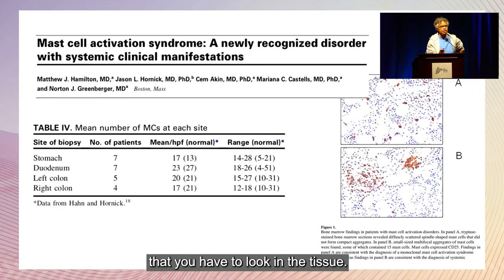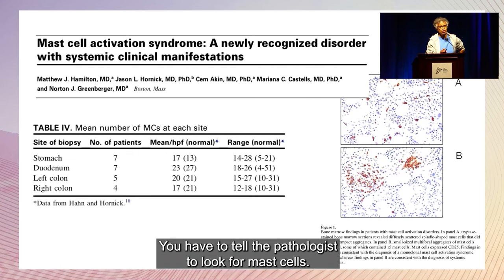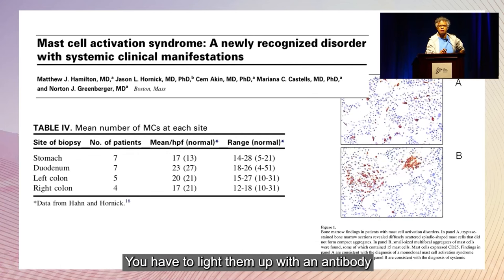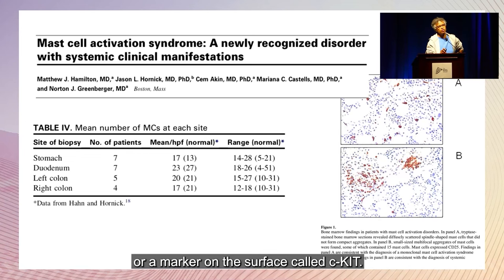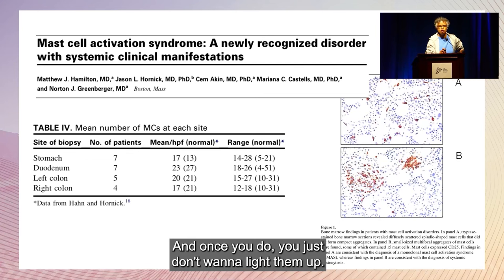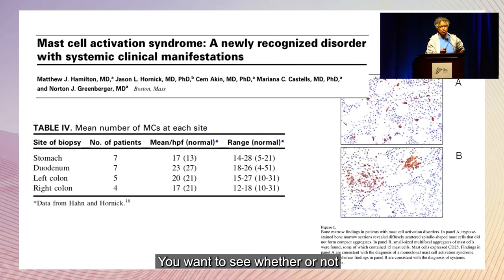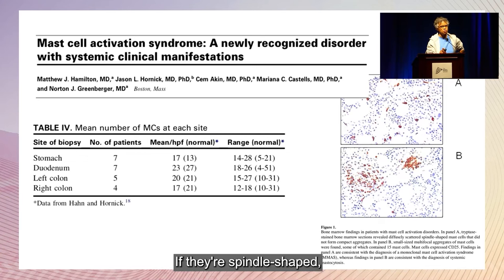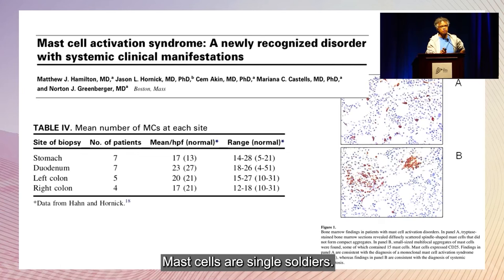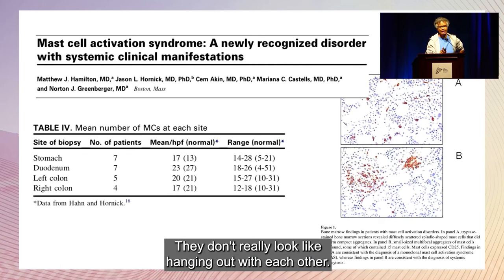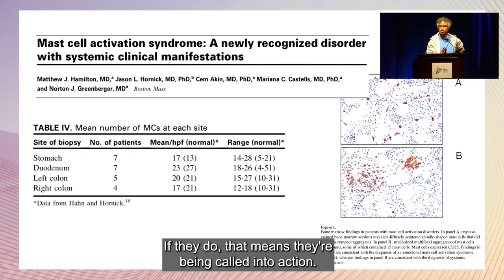It's also important to look in the tissue — tell the pathologist to look for mast cells and light them up with an antibody recognizing the enzyme tryptase or the surface marker C-kit. You don't just want to light them up; you want to see whether they're spindle-shaped or round. If round, they're resting. If spindle-shaped, they're acting up more than they should. If they cluster, that's a signal — mast cells are single soldiers; if they're hanging out with each other, they're being called into action.